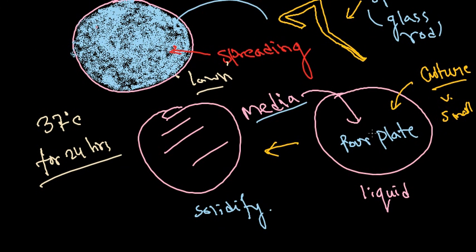For the pour plate method, the main concern is media temperature when pouring: too hot will kill your culture, too cool and it may solidify prematurely. Bacteria are susceptible to temperature variations — you may still see some colonies even with suboptimal temperature, but not the exact number desired. These are the different aspects to take care of during practical work, and this is the basis of how you can culture bacteria.